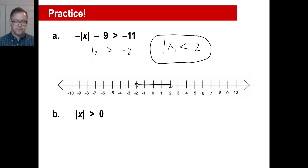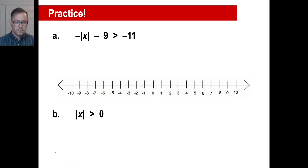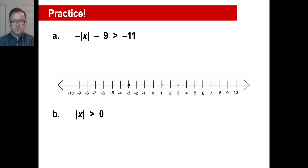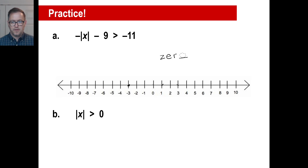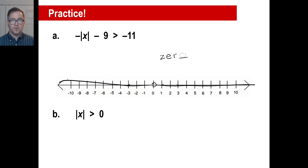Pause it and try B. This is weird. The absolute value of what number is greater than zero? Well, this works, that works, negative three works too. The only thing that won't work is... I won't give away the entire answer, but I'll give you a hint — if you connect these dots, that's the answer. You're going to have to put a circle there — you can't include zero. But you go like this and it includes all those on both sides. So everything works except zero.